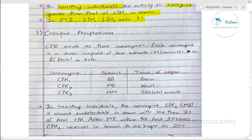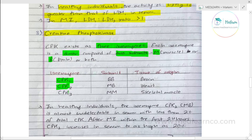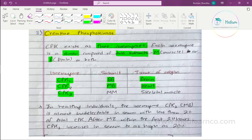The third marker is creatine phosphokinase. CPK exists as three isoenzymes. It is a dimer — M denotes muscle and B denotes brain. The three isoenzymes are: CPK-1 (BB subunit) from brain, CPK-2 (MB subunit) from heart tissue, and CPK-3 (MM subunit) from skeletal muscle.